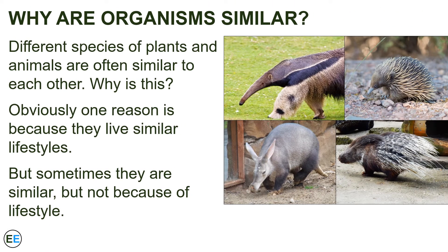When we look at nature, different species of plants and animals are often similar to each other, but why is this? One reason is because they have similar lifestyles, like three of the four animals shown here which eat ants and other insects. That's why the anteater, the echidna, and the aardvark all have those long noses for probing into ant and termite mounds. Two of these species, the echidna and the porcupine, have different diets but are similar in having spines that they use for defense. In nature, we see a variety of different species having similar traits, often because of obvious things like diet or protection.